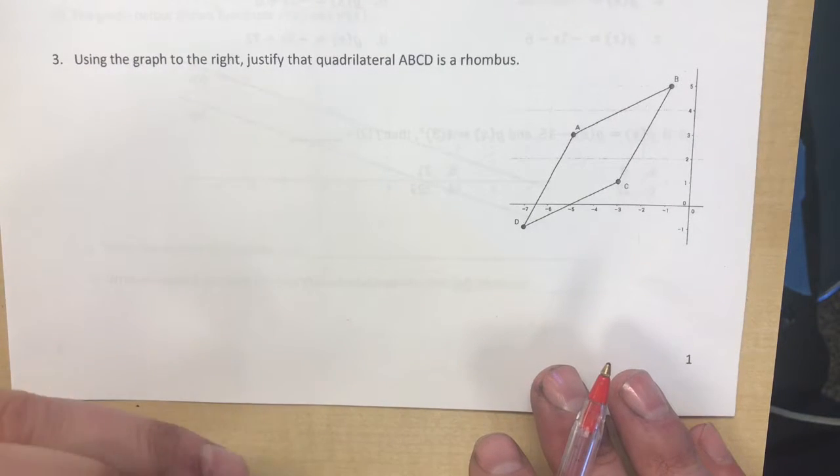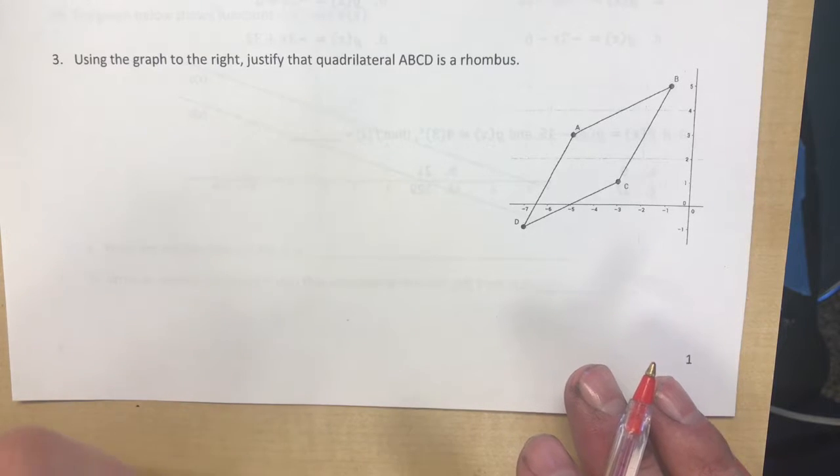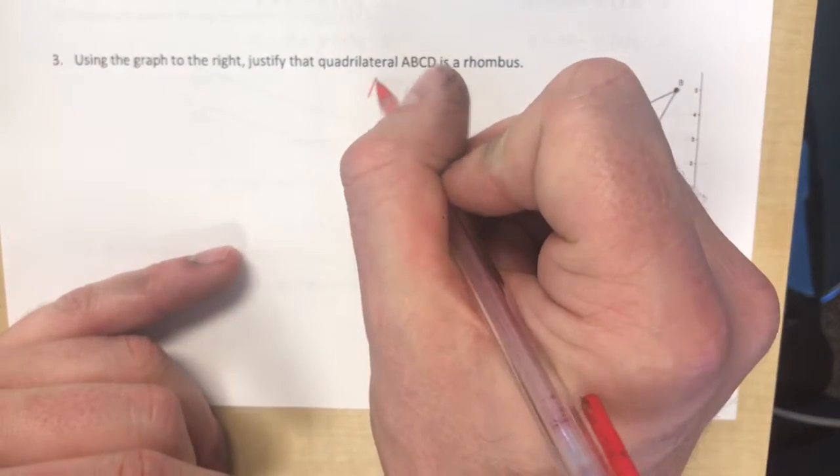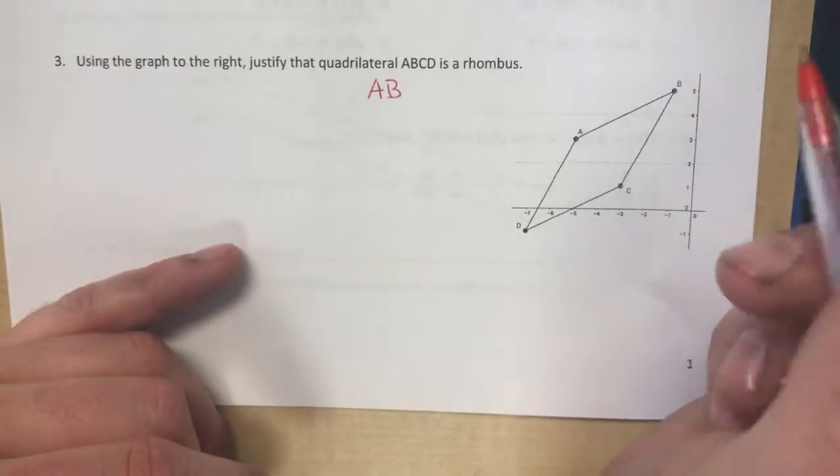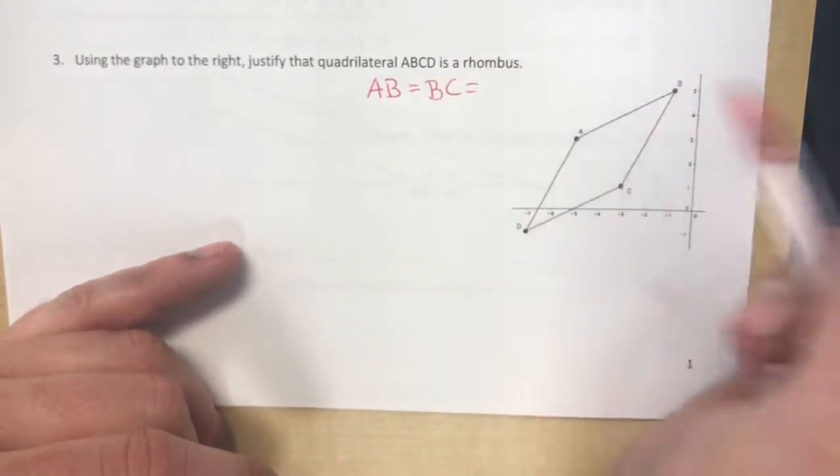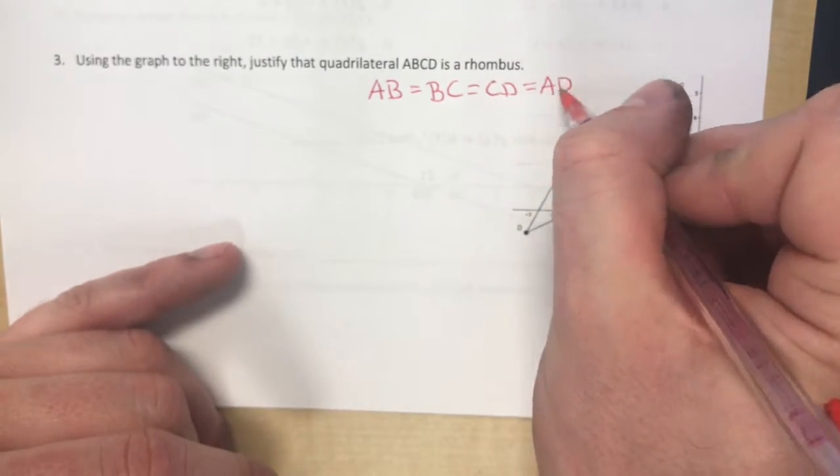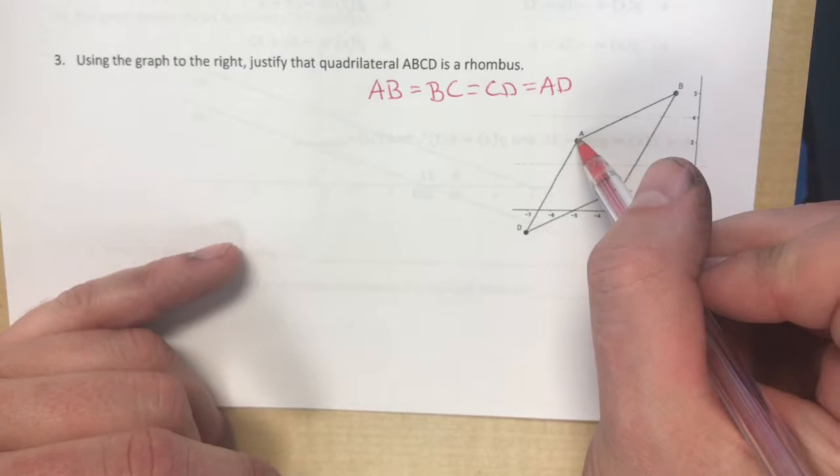So again, we're skipping one and two because I feel like I already did that so much on the other video and I think that you guys really got it by now. Using the graph at right, justify that the quadrilateral ABCD is a rhombus. So a rhombus is a shape where AB would have to equal BC and it would have to equal CD and it would have to equal AD. So let's get these different lengths.